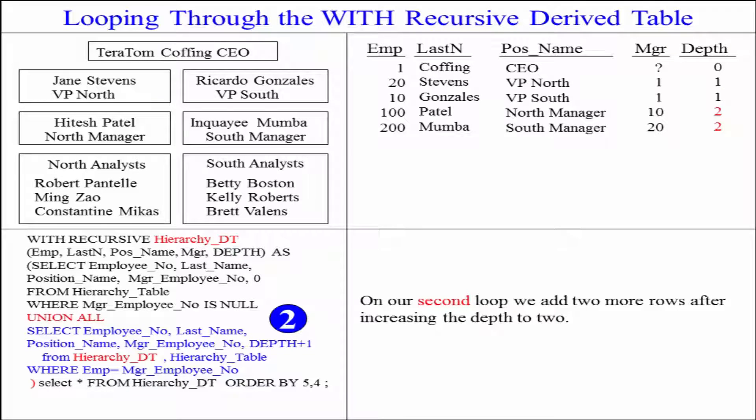Teradata goes then loop again and it goes to a second loop and it does the join between the derived table and the hierarchy table that's the real table on the two columns employee number and the manager employee number and now it's going to add two more rows up above to the people that reported at the second level and now we put a level of two and we're rolling.